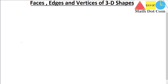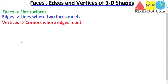Before that, you should know what faces, edges, and vertices of 3D shapes are. Faces refer to the flat surfaces of the 3D shapes. Edges are the lines where two faces meet each other, and vertices are the corners where the edges meet. These definitions will be clearer when you are shown a certain shape. So let's look at the most common 3D shapes and see how many faces, edges, and vertices they have.